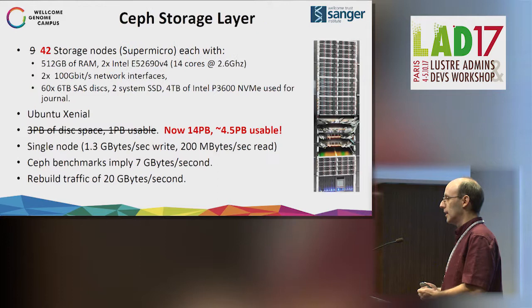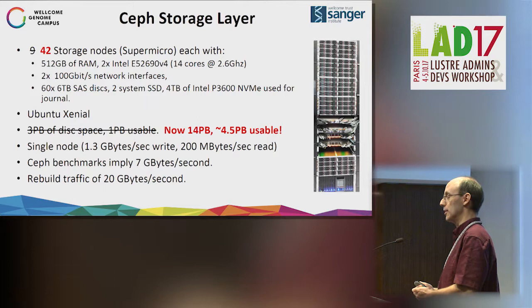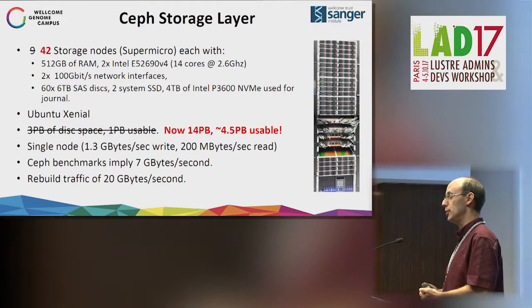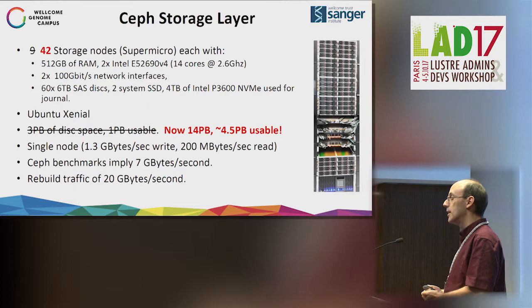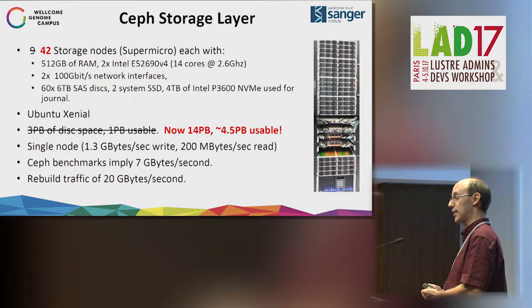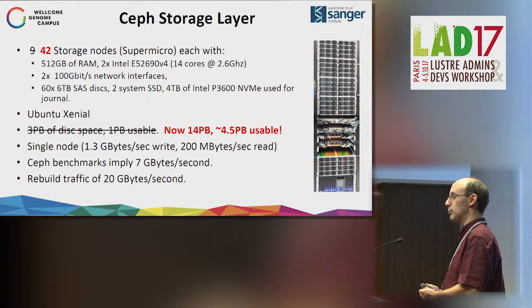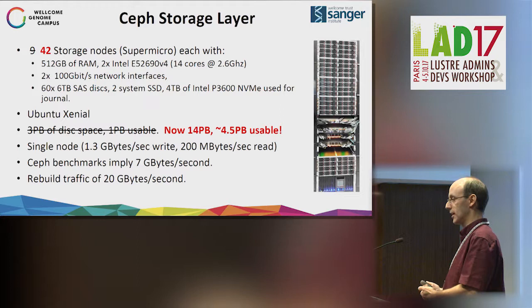The initial deployment was three cabinets. One thing we were surprised by is that people really like using object storage, even if they're using traditional workloads on traditional compute farms, because we made object storage available to the rest of the network and not just to OpenStack. We've already upgraded from one petabyte usable to nearly four and a half petabytes usable. That's using Ceph. The object storage layer is called the Rados Gateway and makes it look like AWS Amazon S3 storage. These are quite meaty boxes with 60 spinner disks and two NVMEs used for journaling, with three-way replication within the same data center.